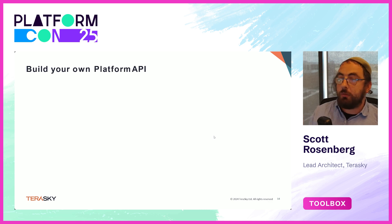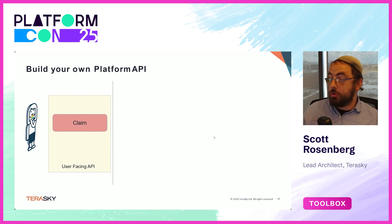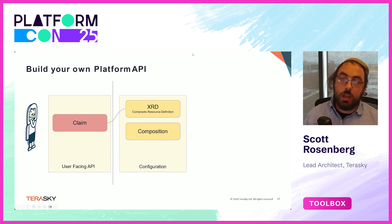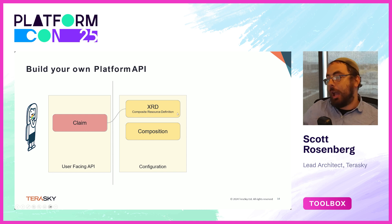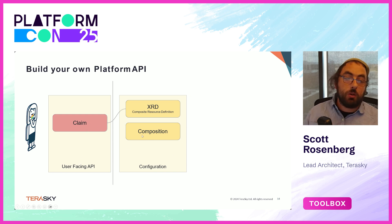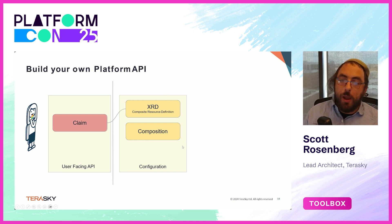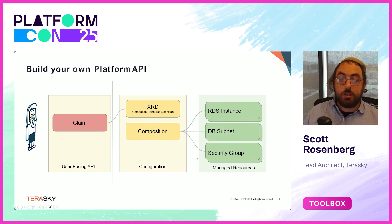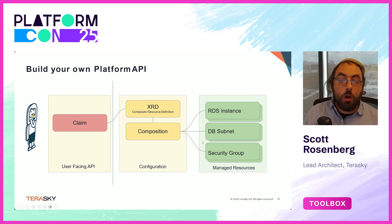It's really about building our own platform APIs. The user supplies what we call a claim — a user-facing API that is an instantiation of the API defined in an XRD within our composite resource definition. They apply that to the cluster, which is picked up by the relevant XRD and composition — the implementation of that XRD. Multiple compositions can implement the same XRD based on labels and different fields, and the correct composition is selected for the claim. The composition then creates the different managed resources provided by those providers — for example, an RDS instance, a DB subnet, and a security group — all backed by a single simple API like your company's database API.